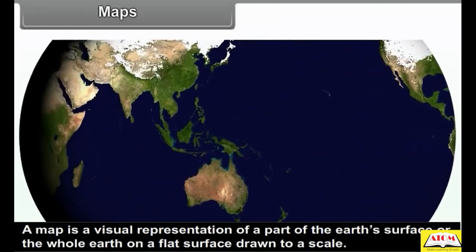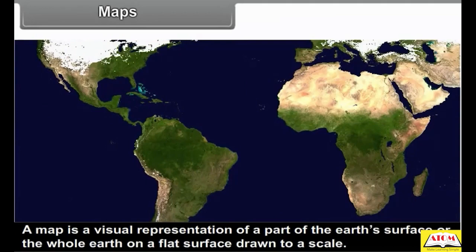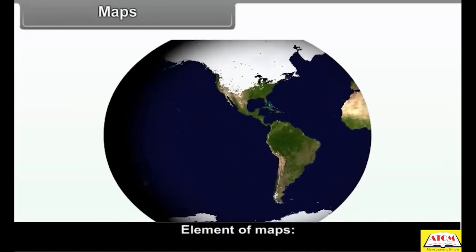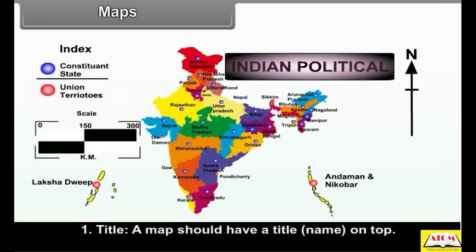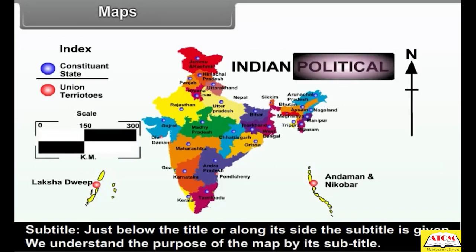A map is a visual representation of a part of the earth's surface or the whole earth on a flat surface drawn to a scale. All maps have a series of common elements known as essential components. Title: a map should have a title name on top. Subtitle: just below the title or along its side, the subtitle is given. We understand the purpose of the map by its subtitle.